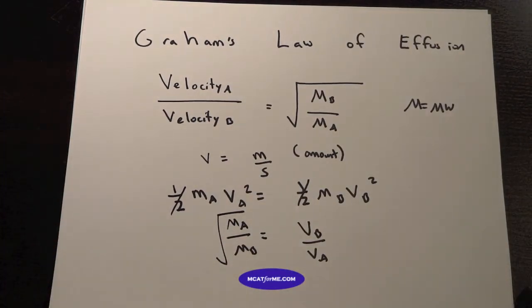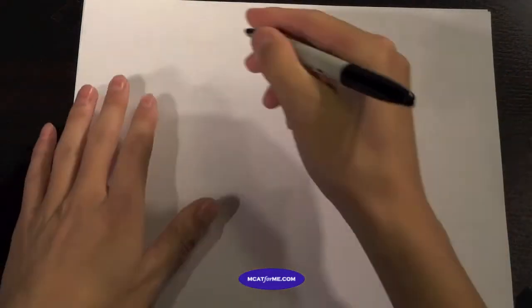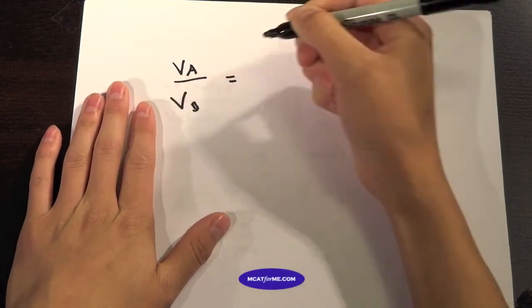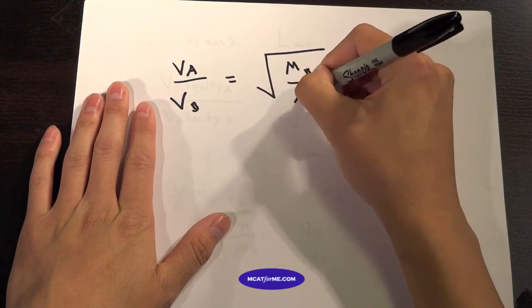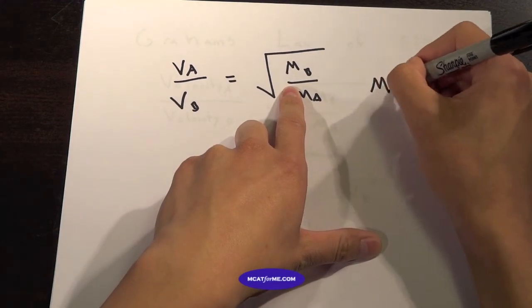Now that we know how to derive this equation, let's figure out what we can do with it. We know VA over VB equals the square root of MB over MA. And I didn't say this before, but M is the molecular weight.